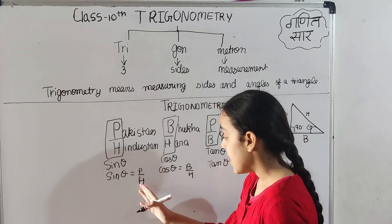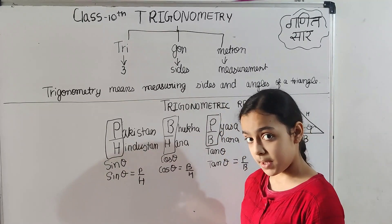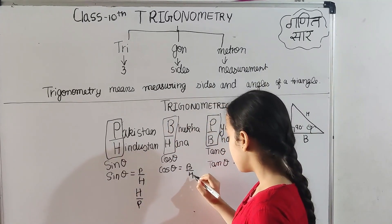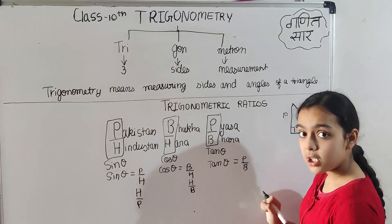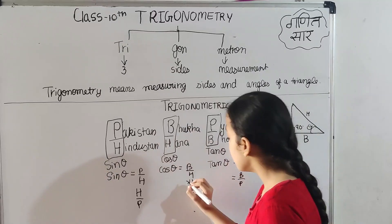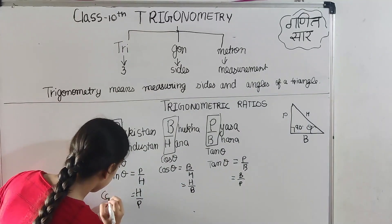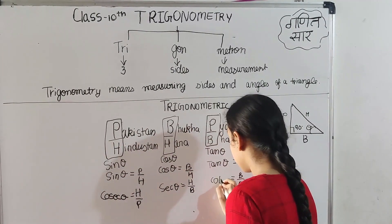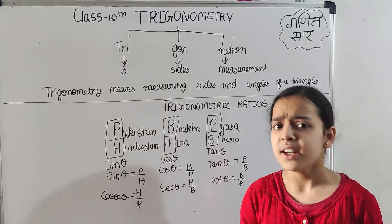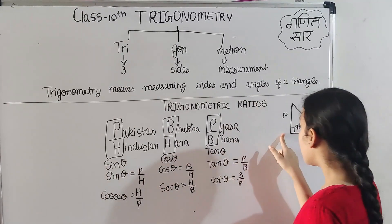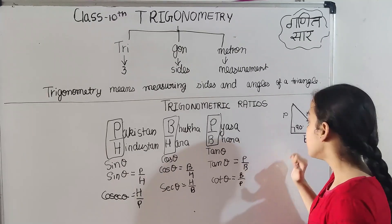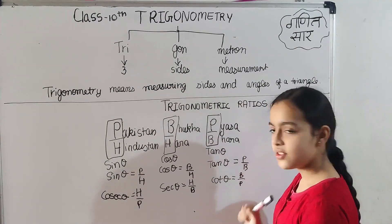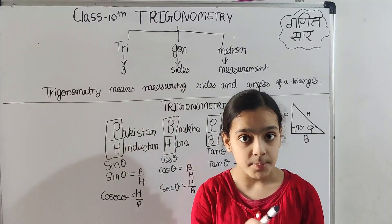When we reverse these three trigonometric ratios, they become six trigonometric ratios. The reciprocal of P upon H is H upon P, the reciprocal of B upon H is H upon B, and the reciprocal of P upon B is B upon P. These are called cosec theta, sec theta, and cot theta respectively. There are three sides in a right angle triangle, giving three ratios; their reciprocals give six trigonometric ratios in total. I hope you have understood the whole topic of trigonometry. Bye!